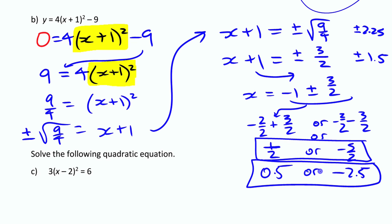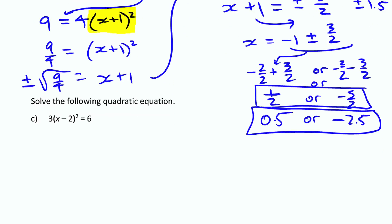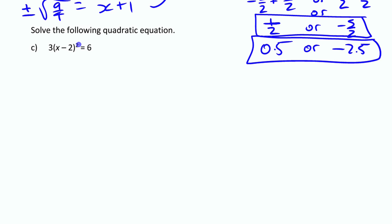Let's try one last equation. It's a quadratic equation, not a function, but you can apply the same isolation strategy. You know isolation works here because x only appears once. If you had an x² and a separate x term you couldn't combine, you'd need a different method. But here, since x appears once, we isolate the squared term first, then apply the square root principle.